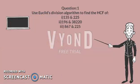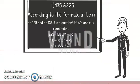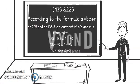Question 1: Use Euclid's division algorithm to find the HCF of 135 and 225. According to the formula A equals BQ plus R.